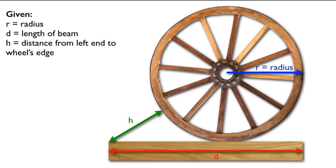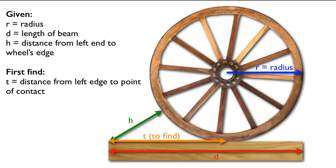Now with those three values, you can actually determine the distance from the left edge to the point of contact. In fact, you only need H and R to do this. So you're first going to find the value of T, the distance from the left edge to the point of contact with the wheel and the beam. And this is going to be in terms of R and H.